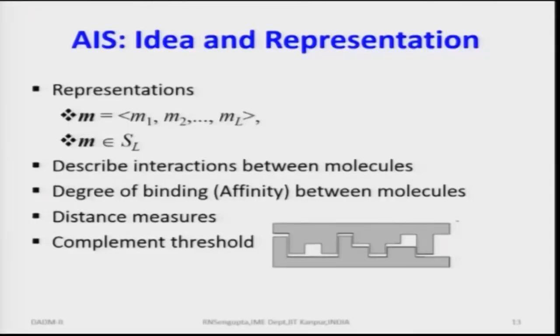The degree of binding or affinity between molecules will also be based on this fitness function. For the fitness function, I had considered the concept of distance measures — L1 norm, L2 norm, L3 norm, L infinity norm, and all these things. We will have a threshold based on which we try to find out how close or far the fitness function is. There may be epsilon errors, but the value of epsilon determines whether it is a good fitness function to proceed with, or not — based on a tolerance limit — before we analyze the problem and build our AIS methodology.